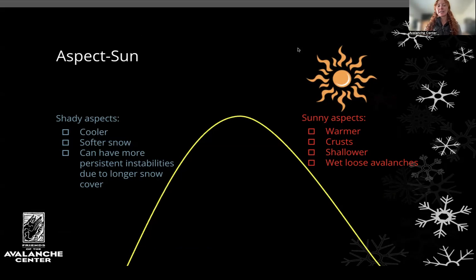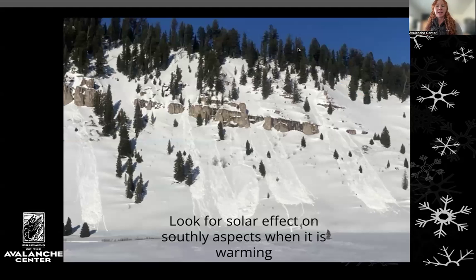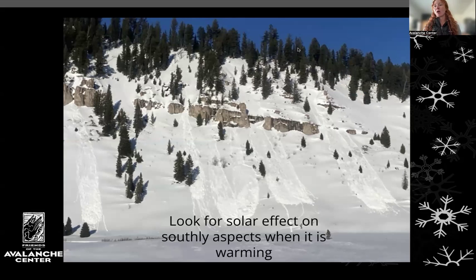Aspect as it relates to the sun — shadier, more northerly aspects are cooler, have softer snow, and can have more persistent instabilities due to longer snow cover. Sunny, more southerly aspects are warmer, have more crusts, shallower snowpack, and are often prone to wet, loose avalanches. On a southerly slope on a warming day, you can see small point-release avalanches in warming or wet snow. As you travel, have good situational awareness — if you see a southerly slope warming and already producing point-release avalanches, that's a significant observation.